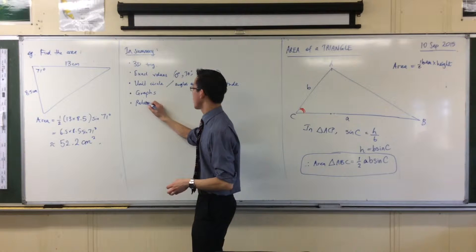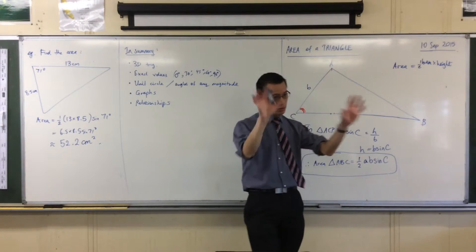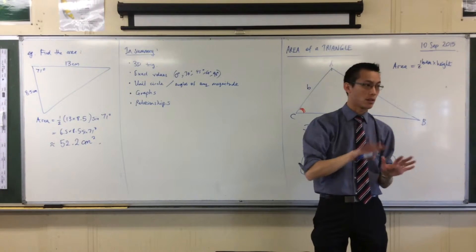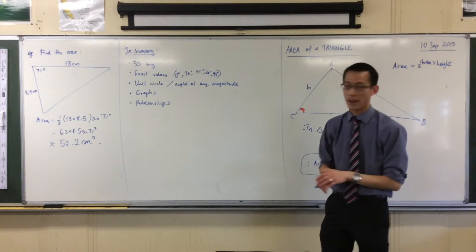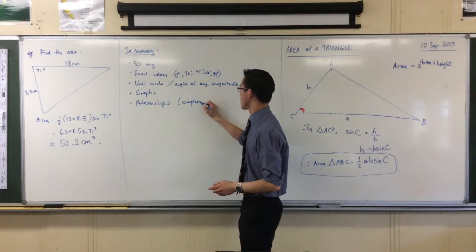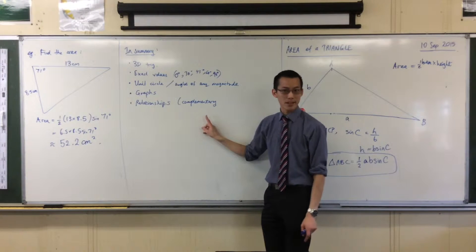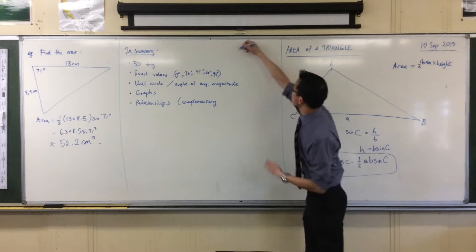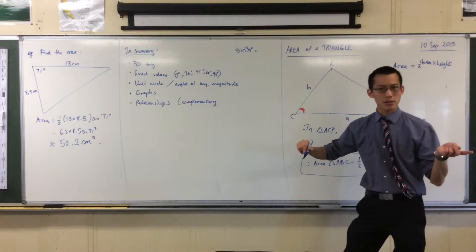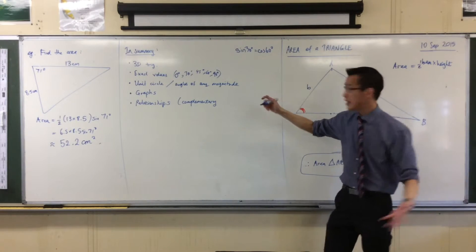Then, thinking about sine, cos, and tan, we noticed that those trigonometric functions are related to each other — they're not just three random things. They are actually connected in really important ways. For instance, we learned that the reason cosine is called cosine is because the 'cos' stands for complement. So, for example, sine 30 is equal to cos 60, because 60 is the complement of 30. And you can do that for any angle.